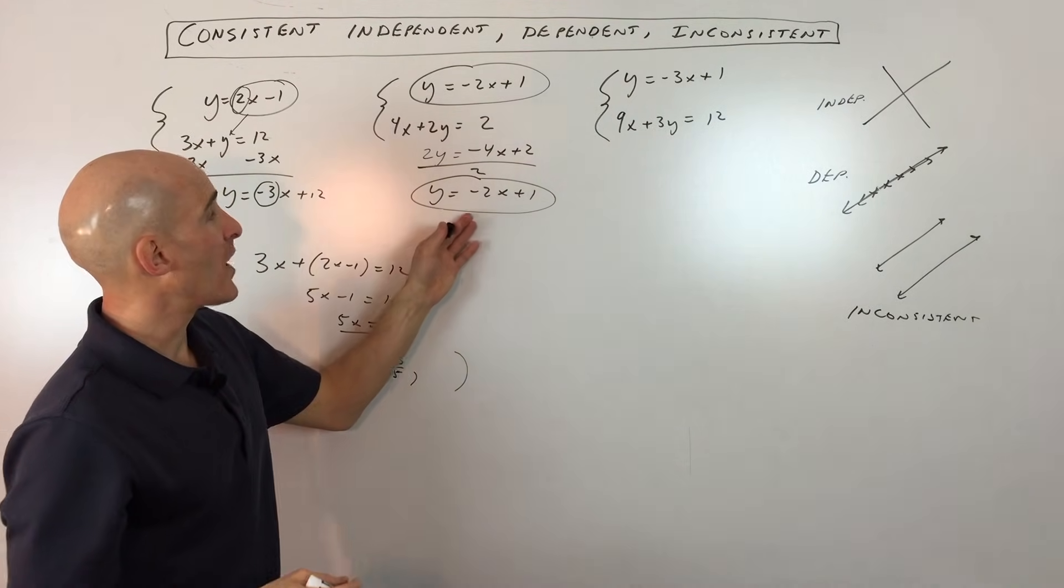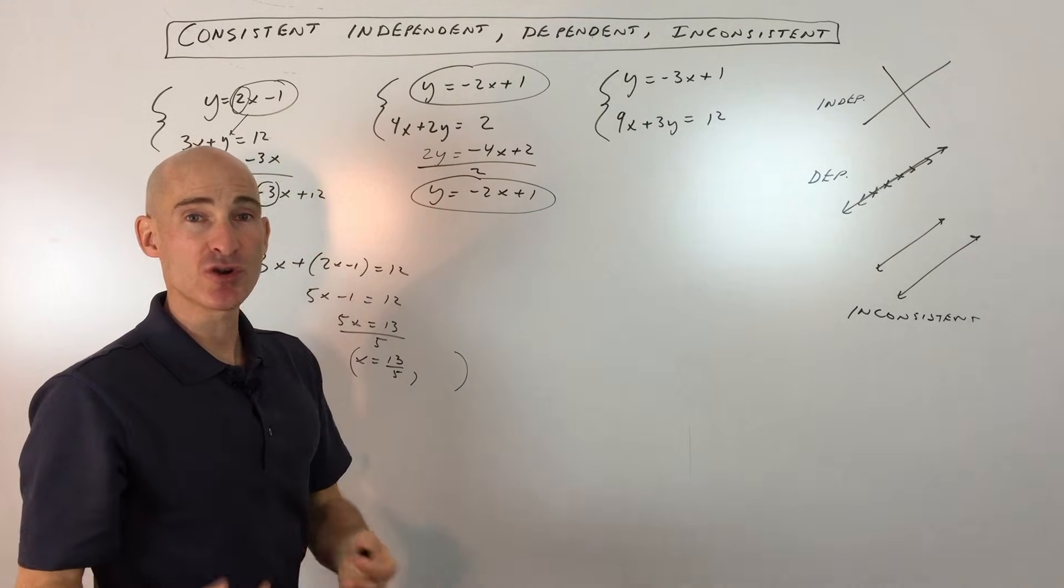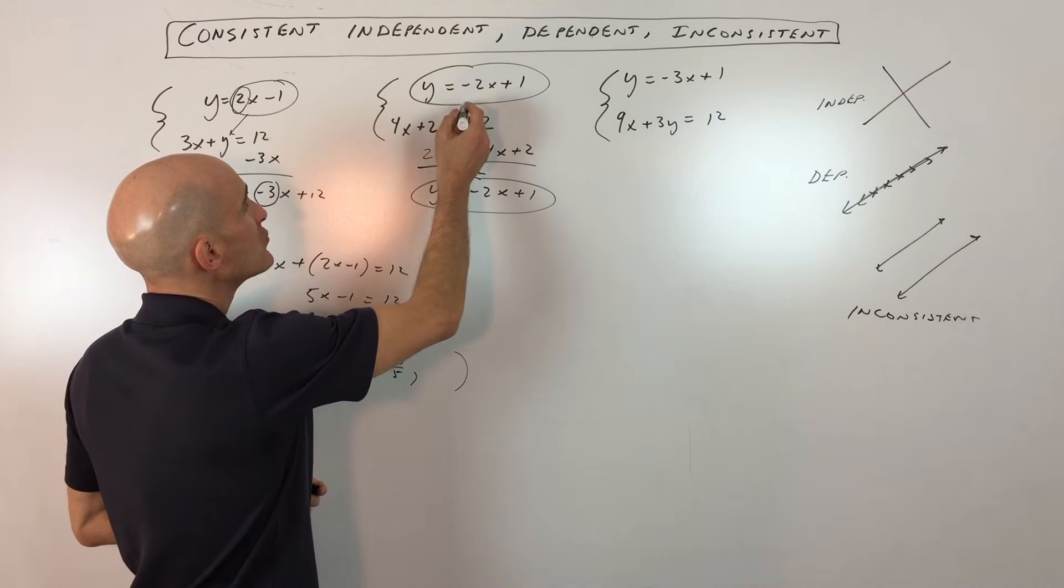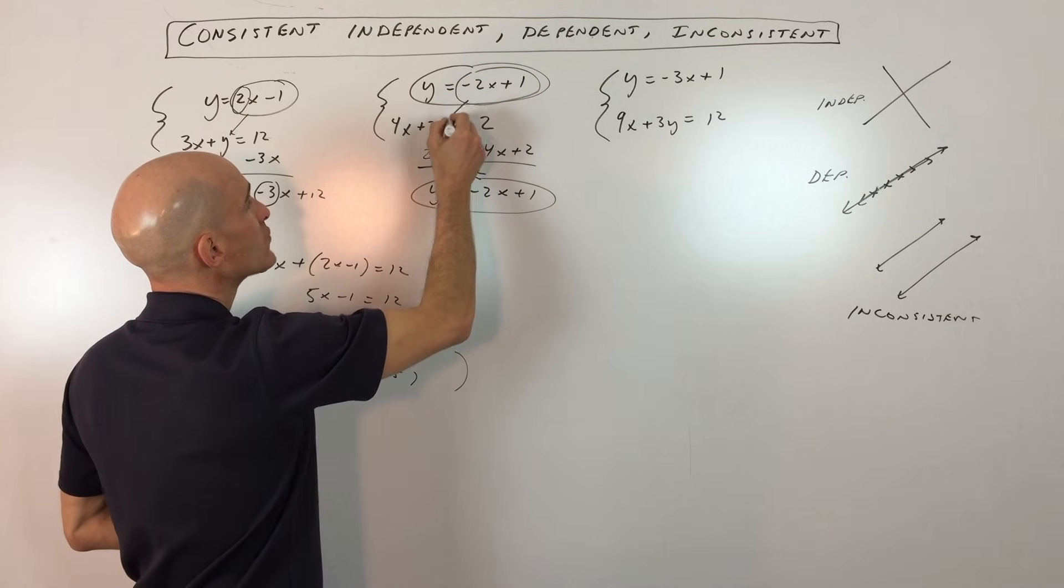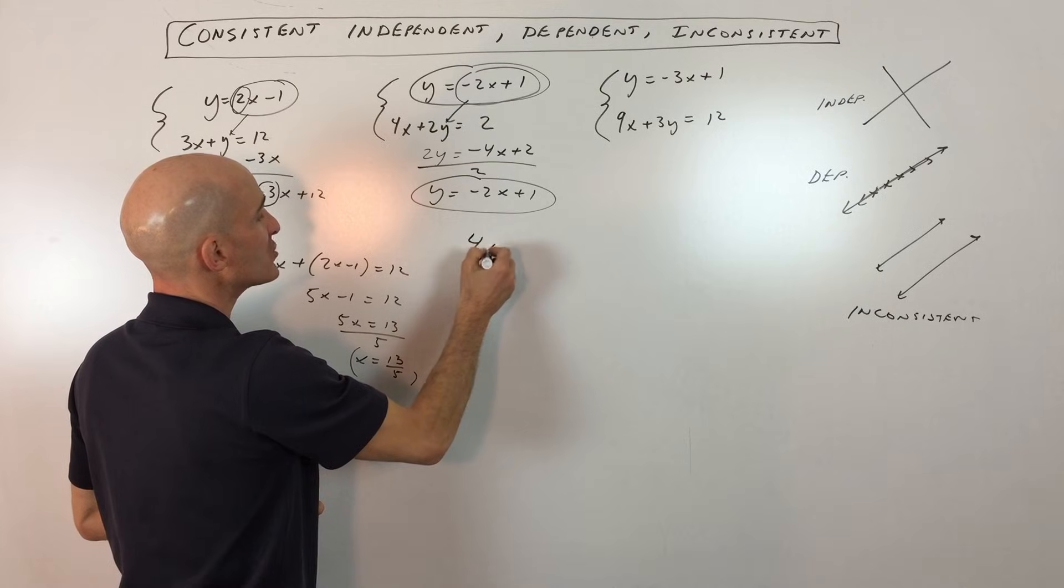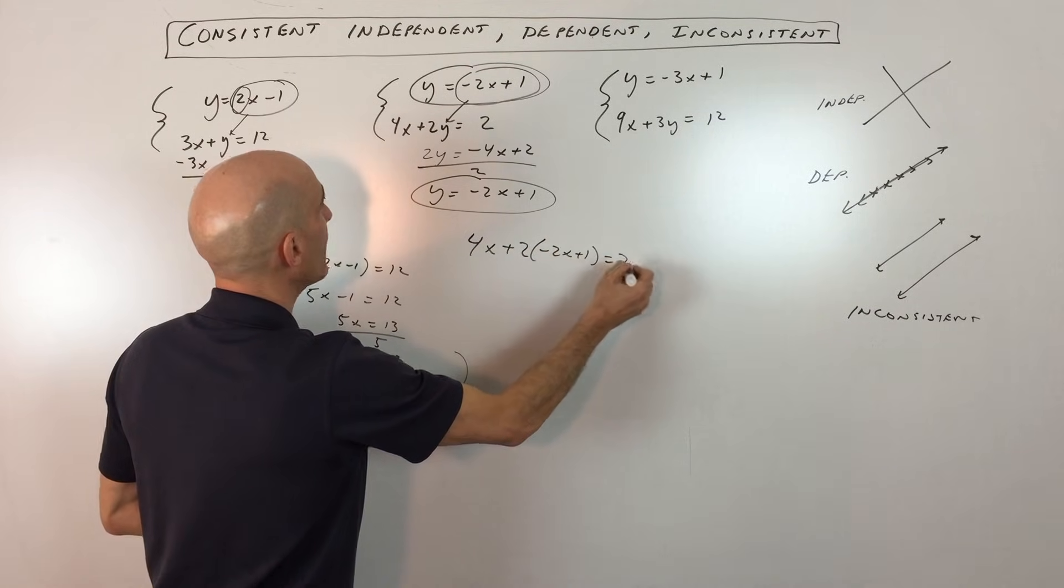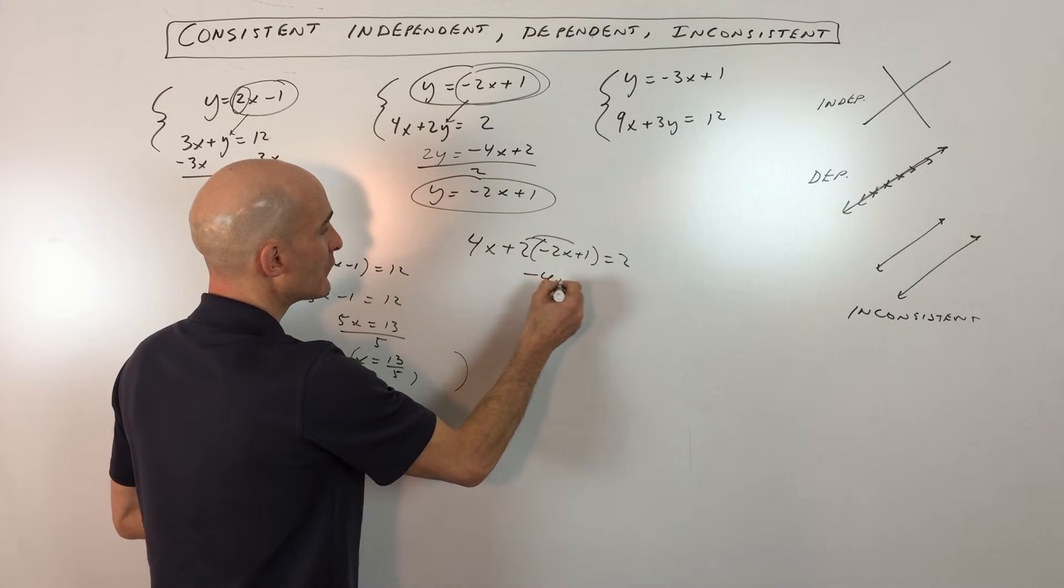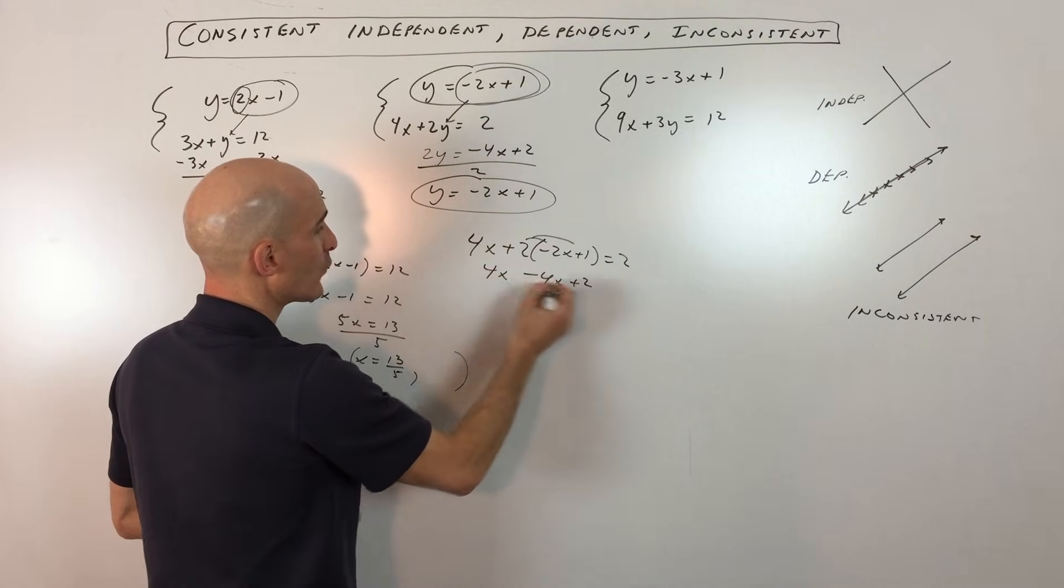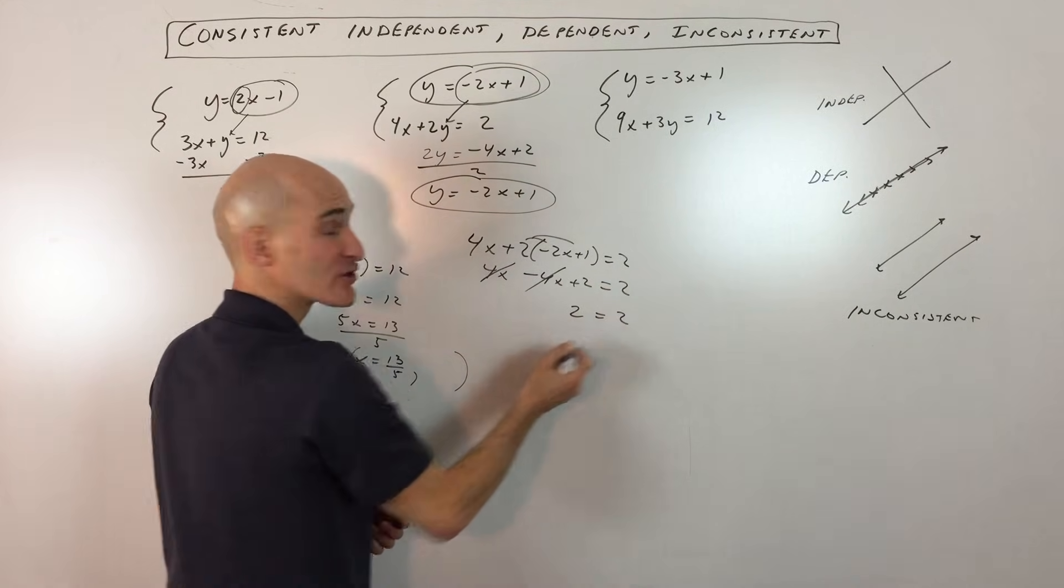Now, if you didn't want to do it that way by rewriting the equation, you just wanted to jump right into the substitution or elimination method, let's go ahead and do that. So since we know that y equals negative 2x plus 1, we're going to put that in place of y in the second equation. That's called the substitution method. So if we distribute the 2, we get negative 4x plus 2, bring down this 4x. 4x and negative 4x cancel and we get 2 equals 2.